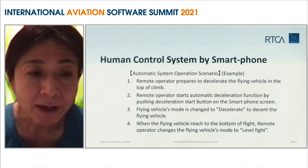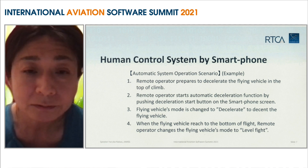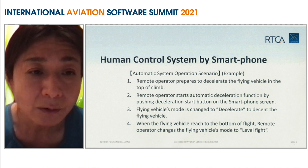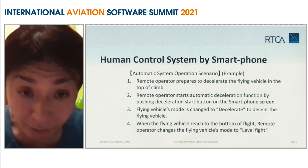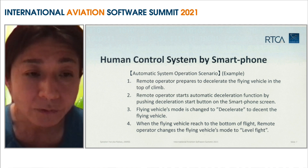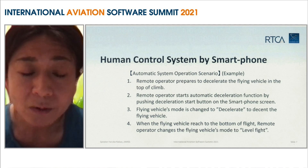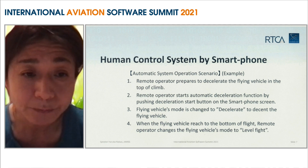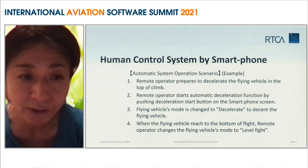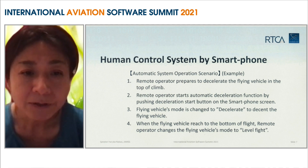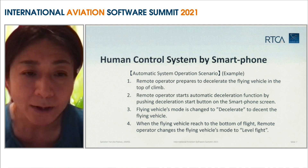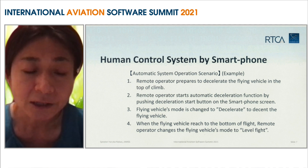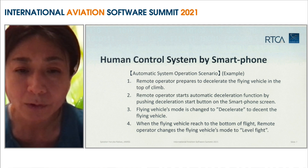I explained the human control system by smartphone as an example of an automatic system operation scenario. The scenario is as follows. First, the remote operator prepares to decelerate the flying vehicle at the top of climb. Second, the remote operator starts the automatic deceleration function by pushing the deceleration start button on the smartphone screen. Third, the flying vehicle mode is changed to decelerate, to descend the flying vehicle. Fourth, when the flying vehicle reaches the bottom of flight, the remote operator changes the flying vehicle's mode to level flight.